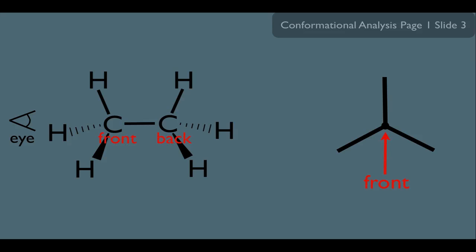The front carbon has three hydrogens directly attached to it. Let's think about perspective. From your eye's viewpoint, you would see the hydrogen above as being on top in the Newman projection. You would perceive the hydrogen going behind the plane in the lower left-hand corner of the Newman. And the hydrogen coming out of the plane would be seen in the lower right-hand corner of the Newman projection.